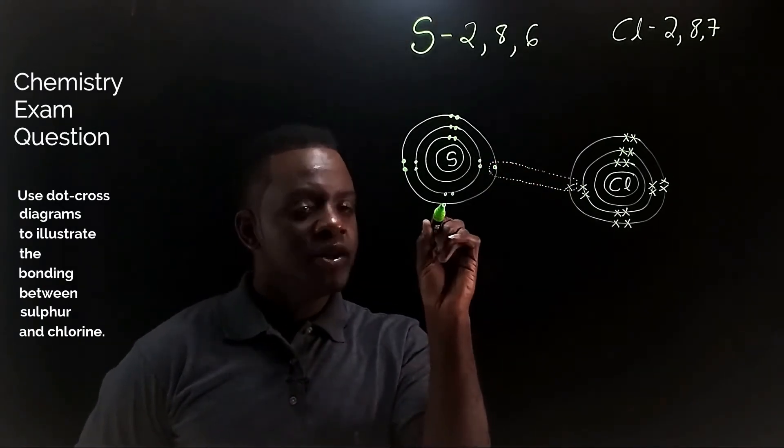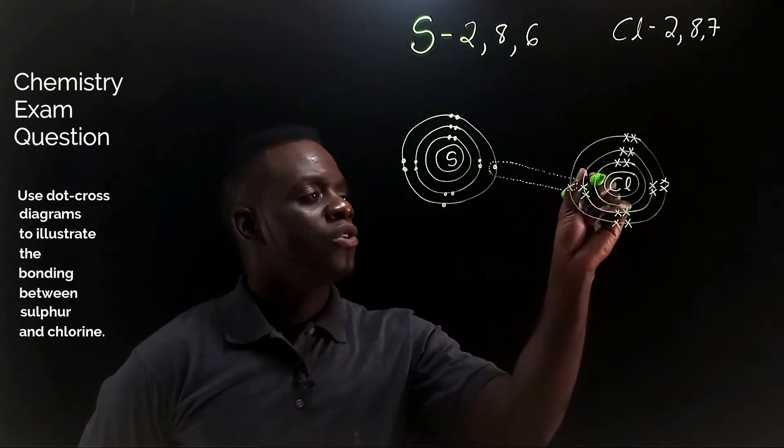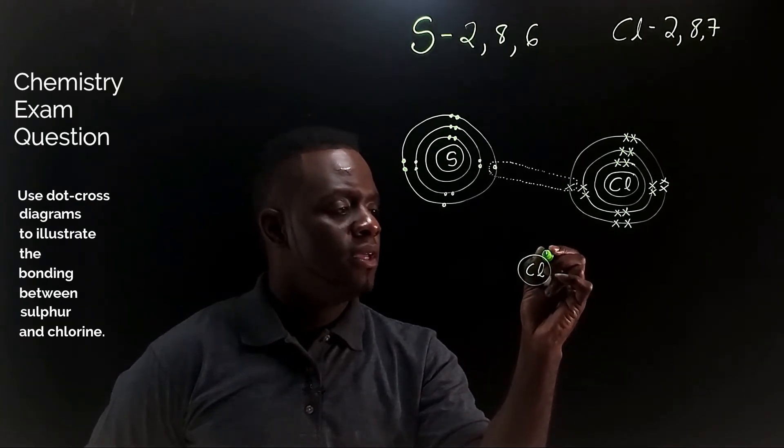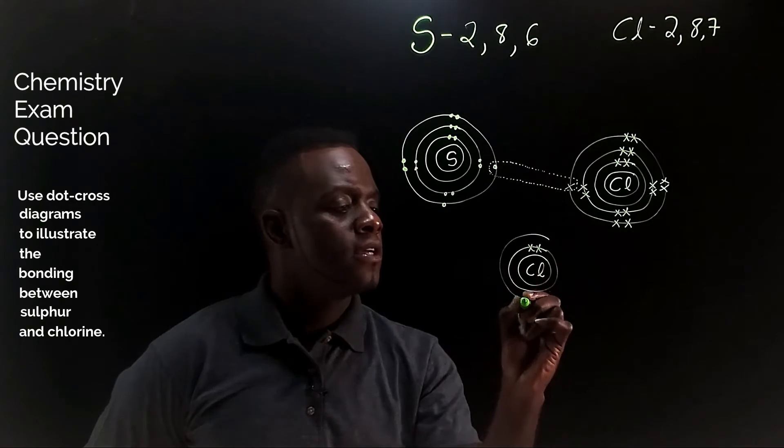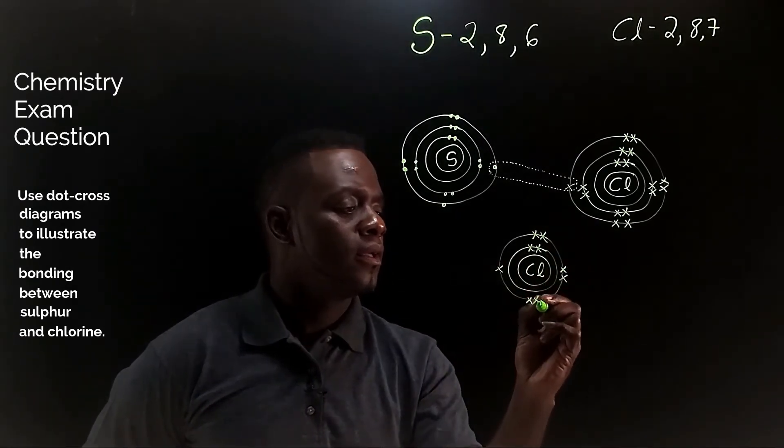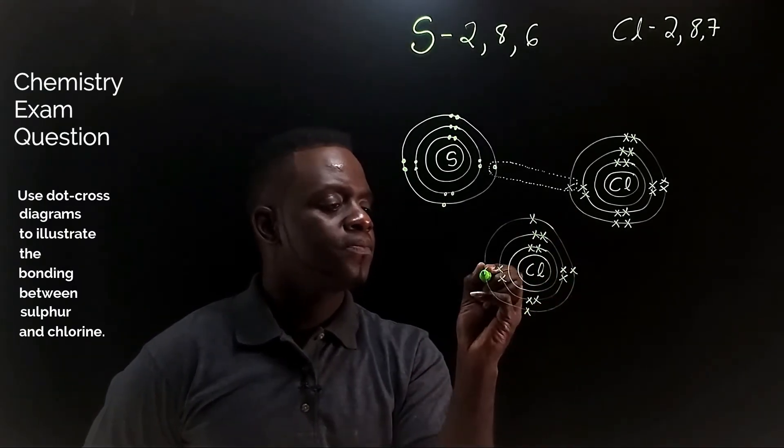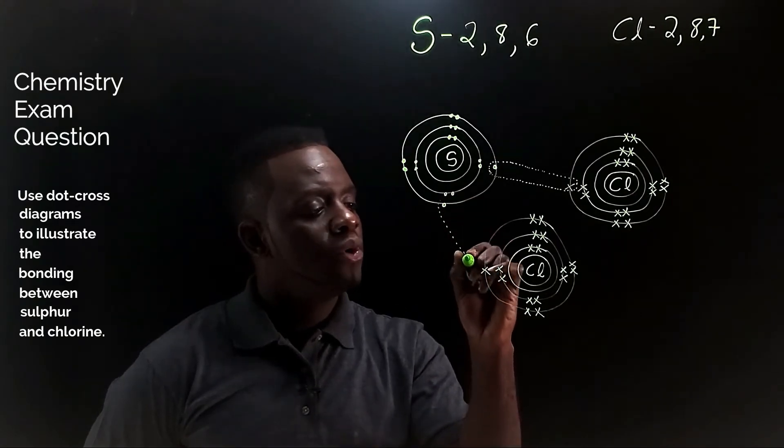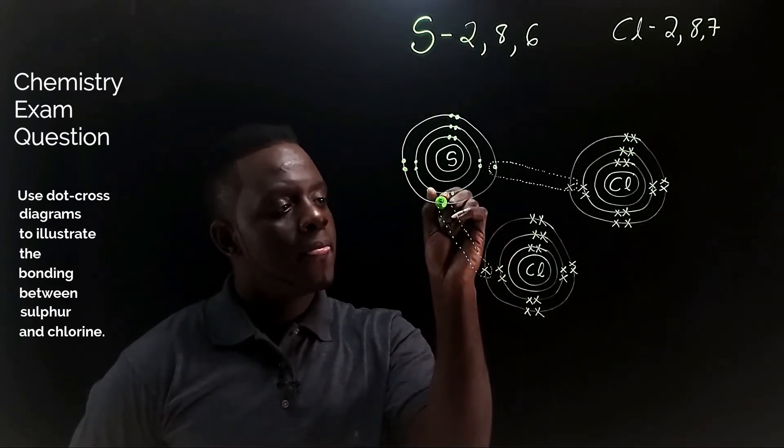We are noticing that sulfur needs one more electron to bond, which means we need to draw another atom of chlorine. So I'll draw it right here with the nucleus, the first shell with two electrons, the second shell with eight electrons, and the valence shell with seven valence electrons. And now I will put dotted lines to show what will happen between sulfur and this other atom of chlorine. They will share this pair of electrons.